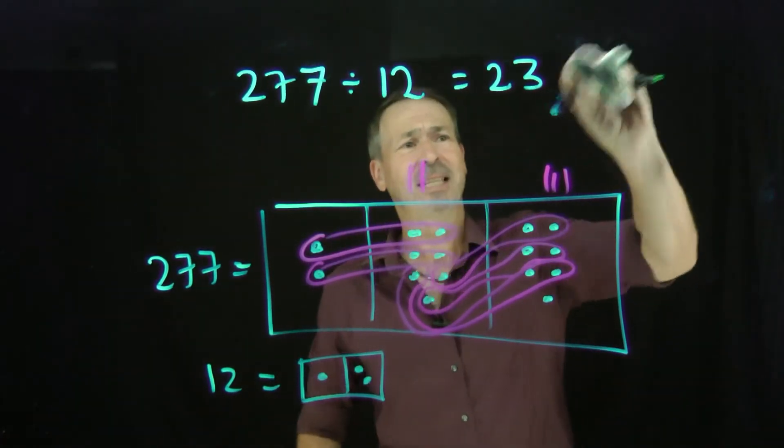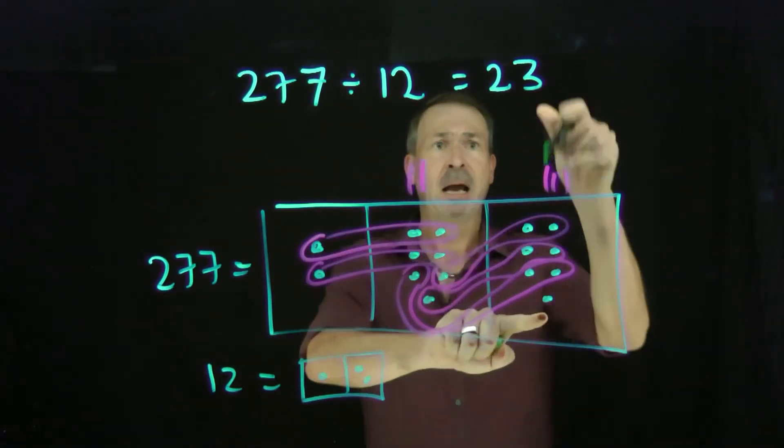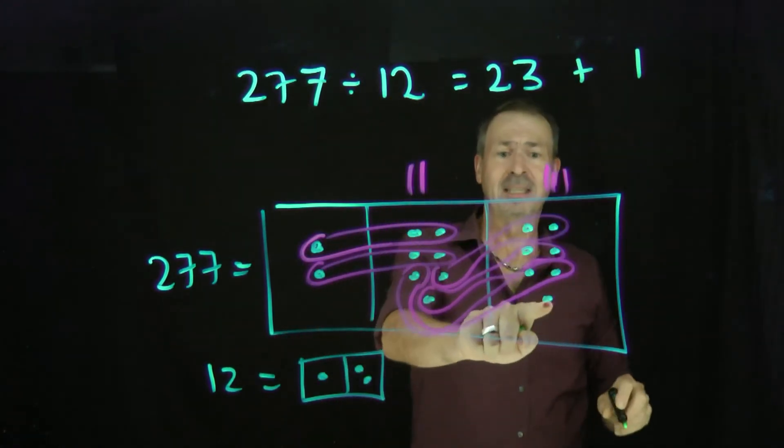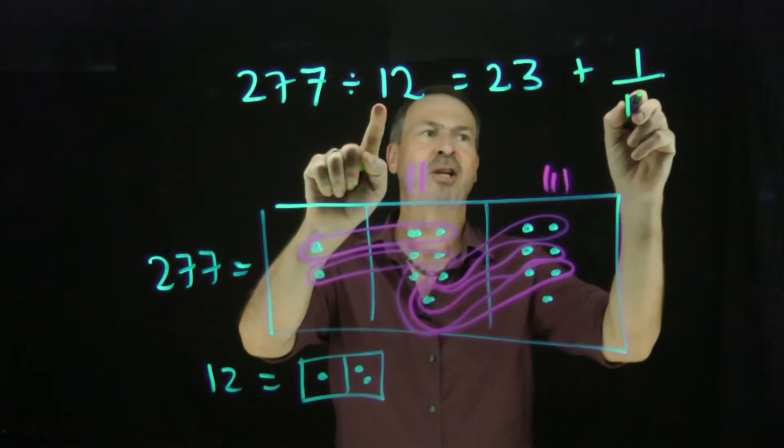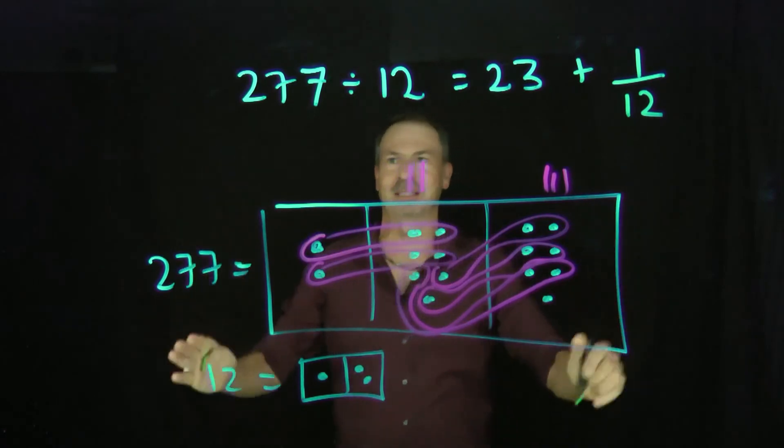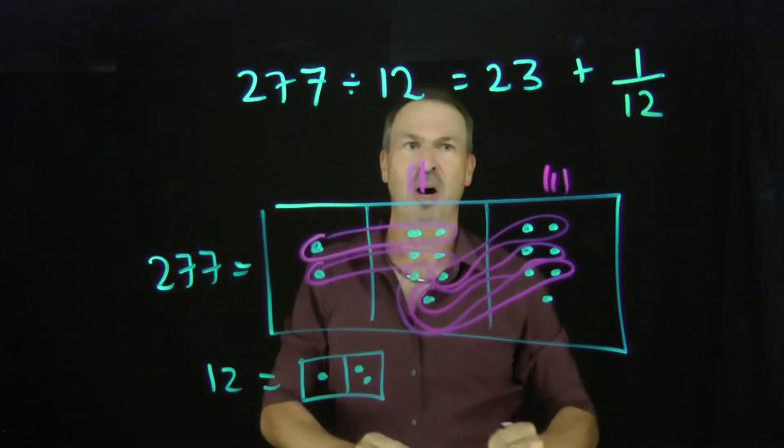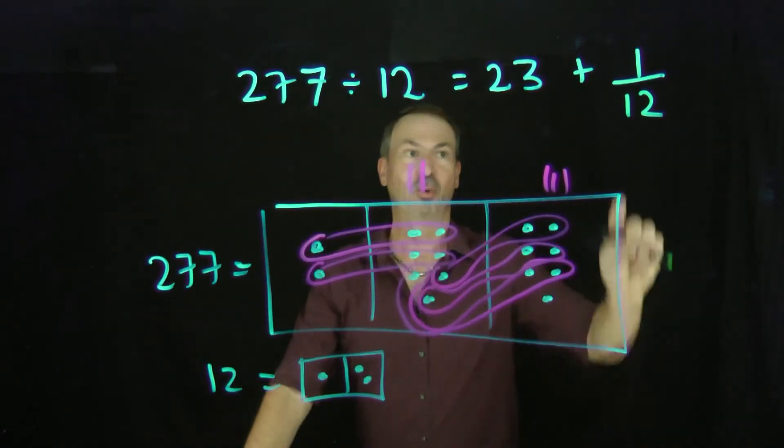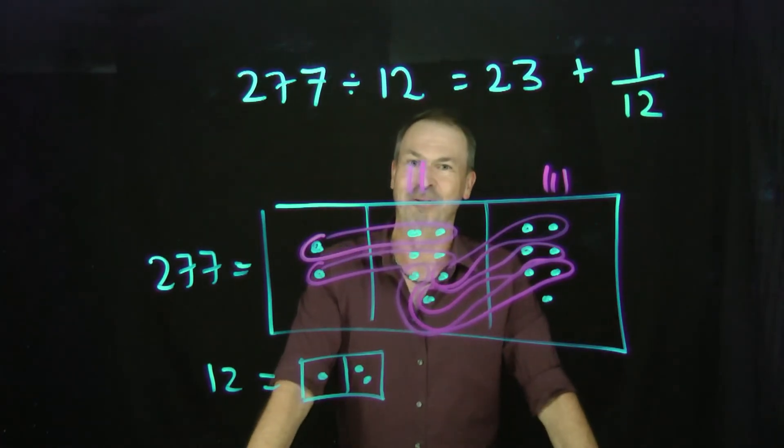Here's the real math answer. The answer is 23, certainly, plus one more dot still waiting to be divided by 12. So actually, the true math answer is 277 divided by 12 is 23 and 1/12. One dot still waiting to be divided by 12. Great.